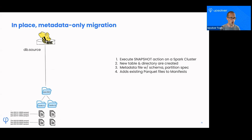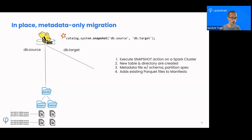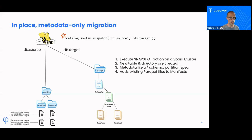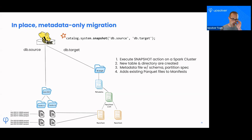When you do the snapshot it copies the schema and partition information from the source into the target, but you don't really have the option to change them or repartition. Here's how that works visually: on the left side I have the Hive catalog, there's a database named 'db' and a table named 'source' already pointing to a Hive table in my S3 bucket. I execute the snapshot command on top of a Spark cluster, and then a new table is created — we call it 'db.target' — a folder is created, and metadata files are created that include the schema, partition info, and table properties gleaned from the source table. The operation creates a mapping from the source Parquet files to the manifest files in the Iceberg table.